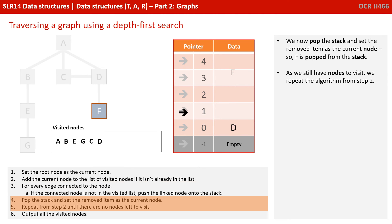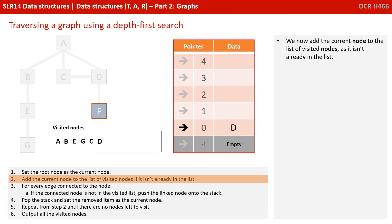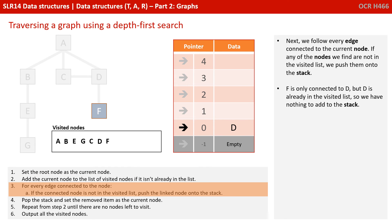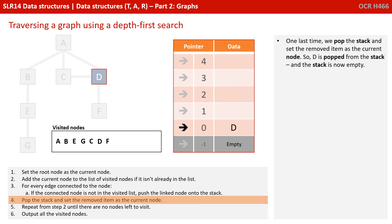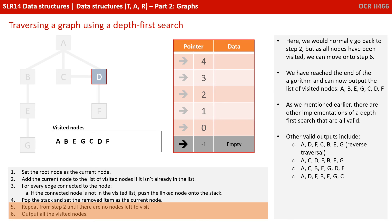We now pop the stack and set the removed item as the current node, so F is popped from the stack. As we still have nodes to visit, we repeat the algorithm once more from step 2. We add F to the list of visited nodes. F is only connected to D, and D is already visited, so there's nothing to push onto the stack at this point. One last time, we pop the stack — D is popped. The stack is now empty. As all the nodes have been visited, we can move on to step 6.